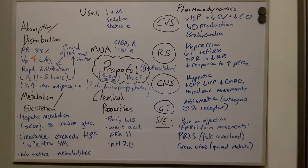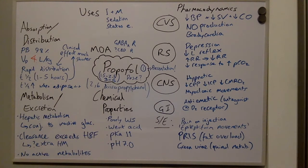Now to discuss the pharmacodynamics of propofol. For the cardiovascular system, it causes hypotension, a reduction in stroke volume, and a reduction in cardiac output. It causes nitric oxide production, which is responsible for the hypotension, and it also causes bradycardia.